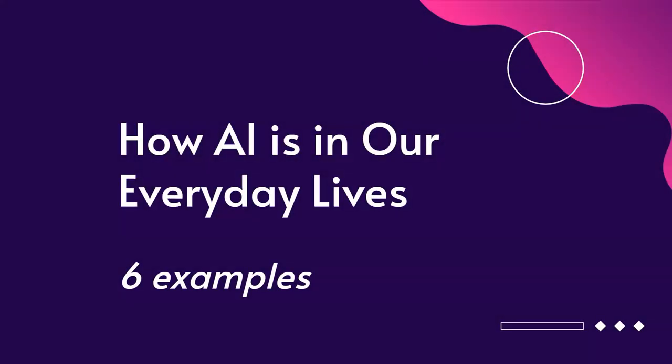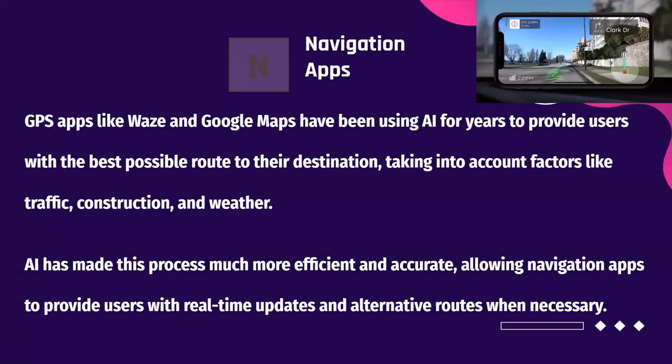So let's talk about a few examples of how AI is used in our everyday lives. First, navigation apps. GPS apps like Waze and Google Maps have been using AI for years to provide users with the best possible route to their destination, taking into account factors like traffic, construction, and weather. Artificial intelligence has made this process more efficient and accurate, allowing navigation apps to provide users with real-time updates and alternative routes when necessary.